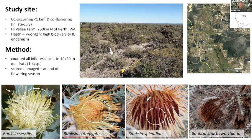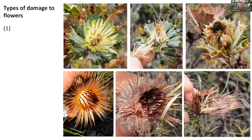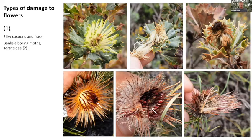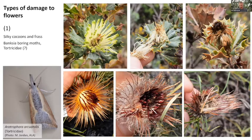There are four types of damage I observed. The first type shows silky cocoons and frass, consistent with damage caused by Banksia boring moths — family Tortricidae, possibly species in the genus Arotrophora or a similar genus called Paraglyphys. Unfortunately I didn't observe any of the adults, so this is conjectural and I hope to confirm the ID next year. I observed this damage on three out of four of my study species — not on Banksia cataglypta.